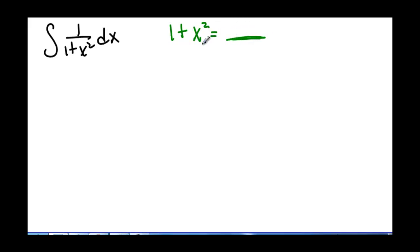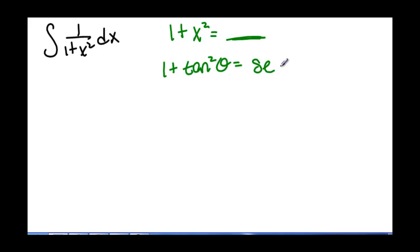We can do this by remembering that 1 plus the tangent squared of theta equals secant squared of theta. And secant squared of theta is one term, so that's what we're looking for.